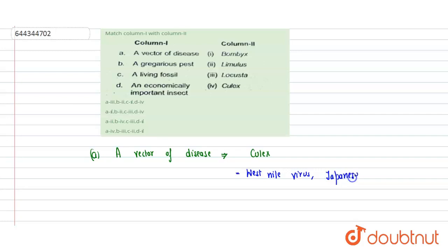Japanese encephalitis and other important diseases are transmitted by this. This is a mosquito, not a virus. This is a group of mosquito which acts as a vector for transmission of disease.